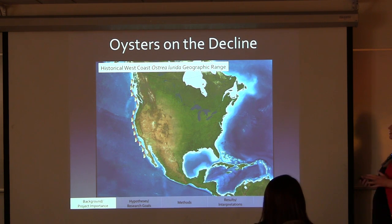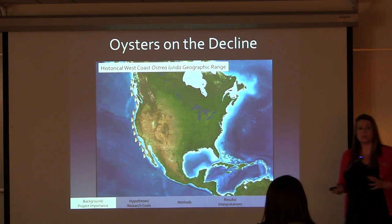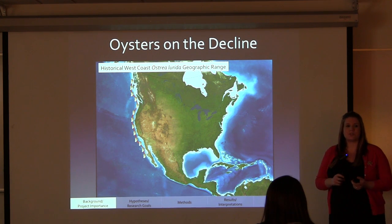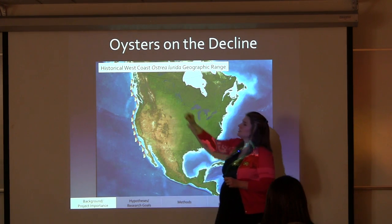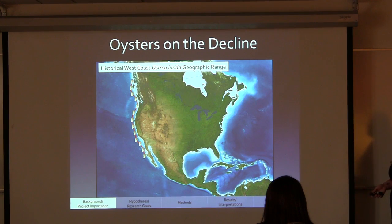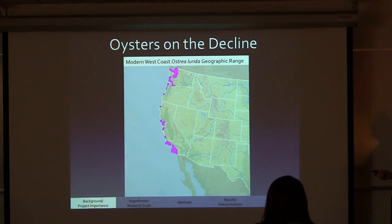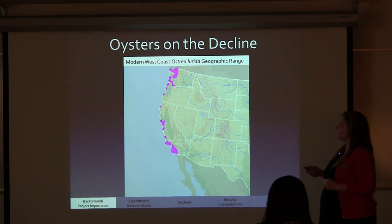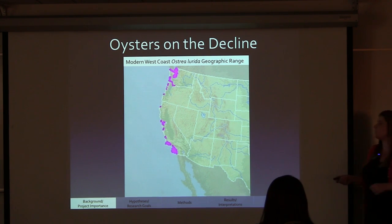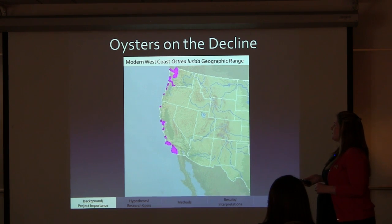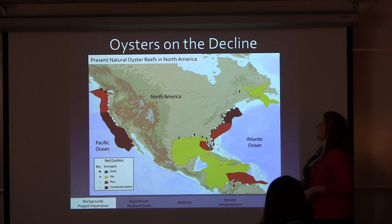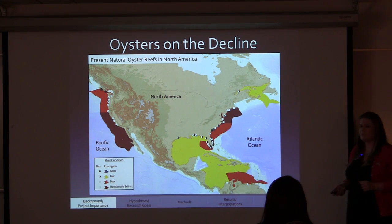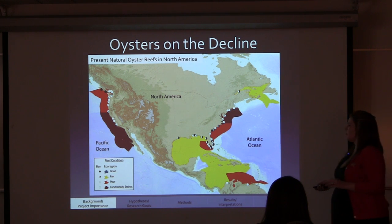All of this leads to why we are doing this project — oysters are declining along our coast. We have one native species of oyster, Ostrea lurida. Its historical range once stretched from Sitka, Alaska down into Baja, California. But now the modern west coast geographic range is very sporadic and we don't see it as much along our coast anymore. Oyster reefs along the eastern coast began going extinct and now the western coast is following the same trend, with natural oyster reefs basically functionally extinct or in very poor condition.